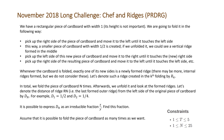The problem states we have a rectangular piece of cardboard with width 1. Its height is not important. We are going to fold it in the following way: pick up the right side of the piece of cardboard and move it to the left until it touches the left side. This way, a smaller piece of cardboard with width 0.5 is created. If we unfolded it, we could see a vertical ridge formed in the middle.